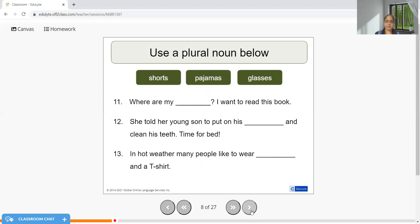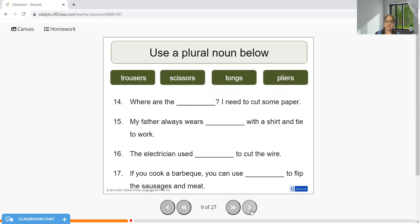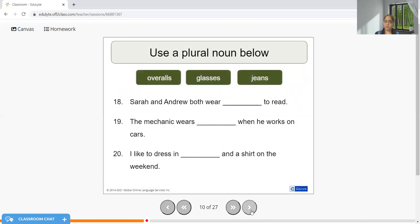Where are the scissors? My father always wears trousers with a shirt and tie to work. The electrician used pliers to cut the wire. If you cook a barbecue, you can use tongs to flip the sausages and meat.